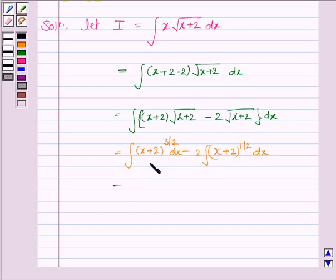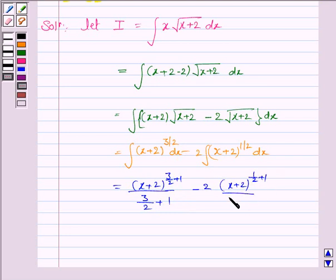And the integral of this is x plus 2 to the power 3 by 2 plus 1 upon 3 by 2 plus 1 minus 2 into x plus 2 to the power 1 by 2 plus 1 upon 1 by 2 plus 1 plus c, where c is the constant of integration of both the integrals.